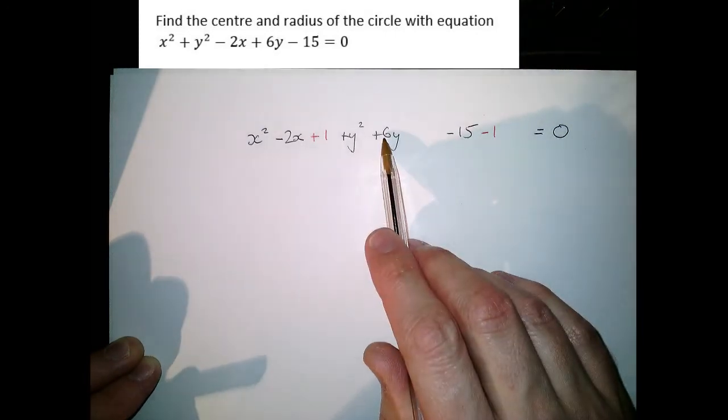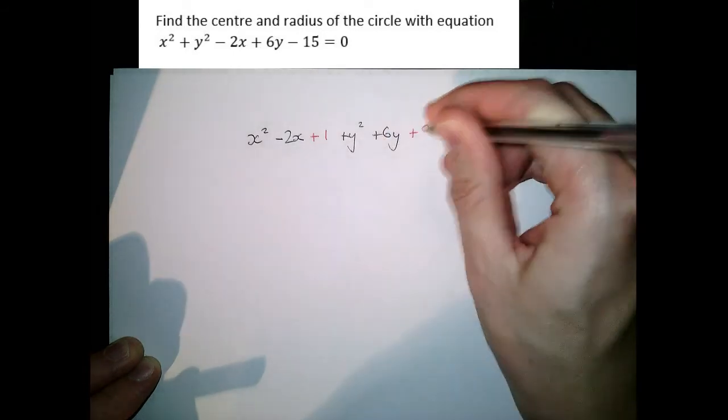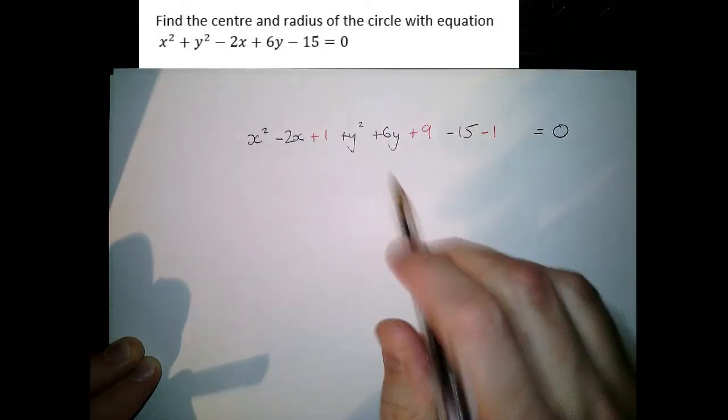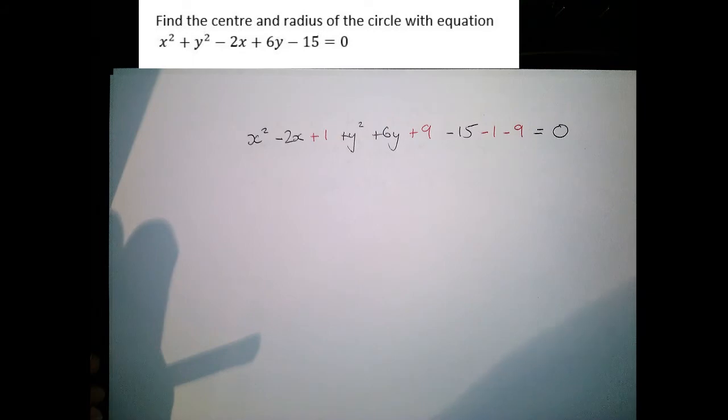Half of 6 would be 3 and if I square that I get 9 so I'm going to add in a 9 there that completes the square of the y bit. We're going to take away the 9 as well just to keep the equation balanced and now let's think about what we can do with what we've got here.